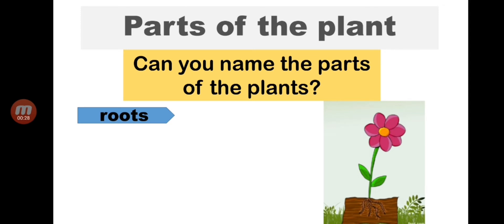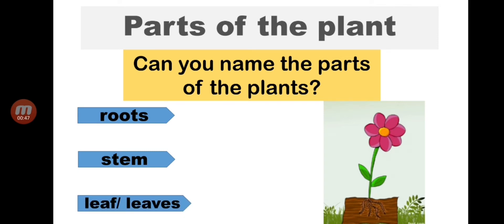Next is the stem. Another word for stem is trunk. The stem is the one that takes water going to the leaves. The leaves, or leaf, also help the plant to make food.